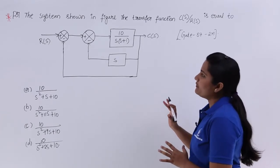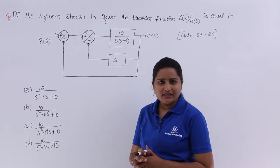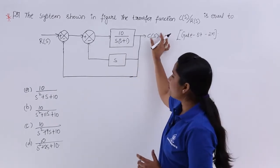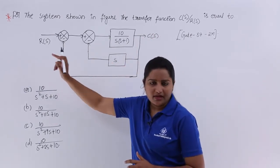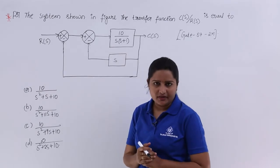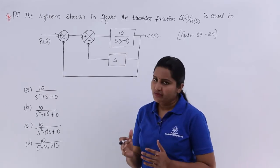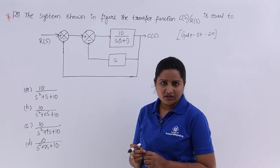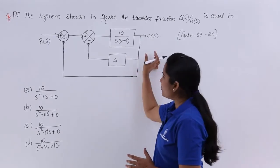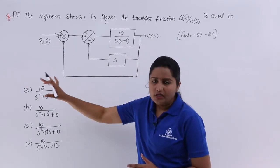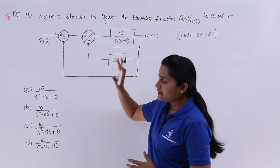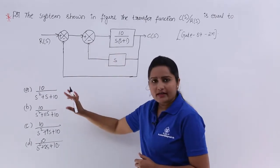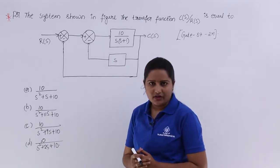We need to find out the transfer function of this control system, which is nothing but the output transform divided by the input transform, C(S) by R(S). Even if C(S)/R(S) is not explicitly stated, the transfer function is always output transform by input transform. From this block diagram we need to find the relevant transfer function.